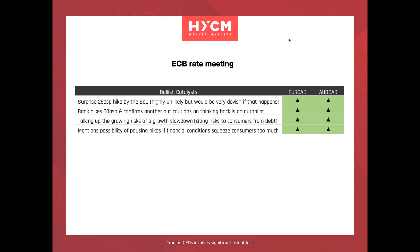If the Bank of Canada hikes by 50 basis points but talks about slowing growth risks, you could see the CAD weaken out of the decision. For a 25bps hike surprise, I'd be buying EUR/CAD or AUD/CAD at market. If they hike 50bps but confirm that back-to-back hikes aren't guaranteed and signal caution, I'd expect CAD weakness and EUR/CAD upside. If they mention growing risk of a growth slowdown or the possibility of pausing hikes due to the high house price issue squeezing consumers, that would be EUR/CAD and AUD/CAD upside.